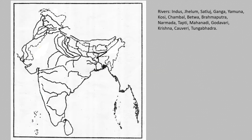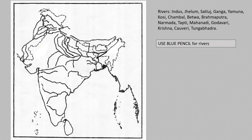The third part is very important. Once you learn the river map, it will be very easy to do the other parts of the map. Please be careful — color should be correct. Use blue pencil for rivers.